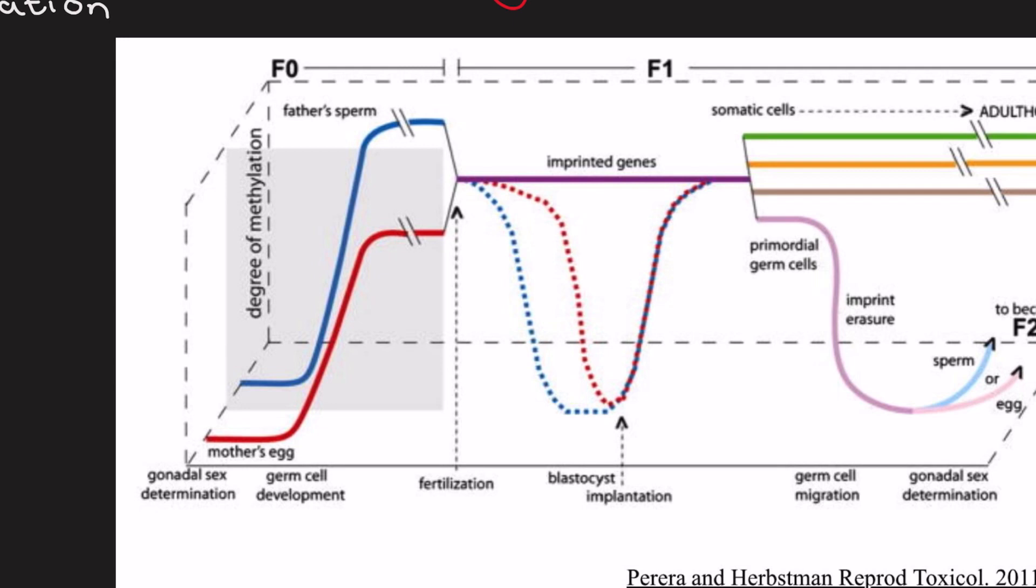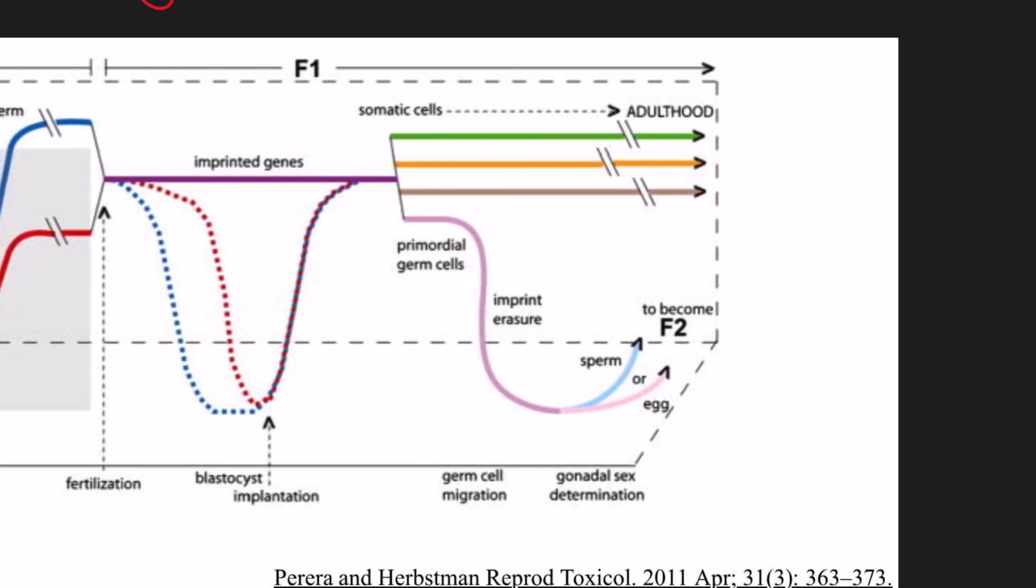The second window is post-conception, the F1 stage, and it's embryonic development when the imprinted genes are demethylated with the male germline demethylating more quickly, which is the blue dotted line, followed by the female, which is the red dotted line. So the female demethylates slower.